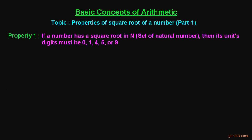Welcome friends. In this video we shall learn one of the properties of the square root of a number. According to this property, if a number has a square root in the set of natural numbers, then its units digit must be 0, 1, 4, 5, or 9.